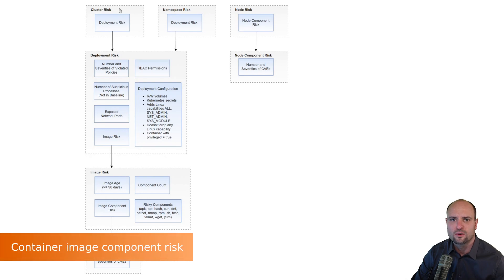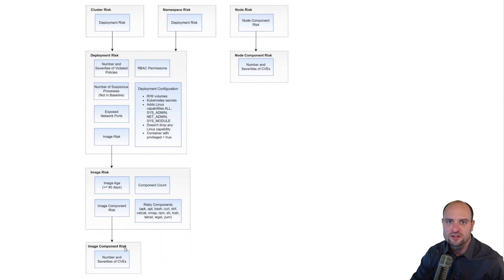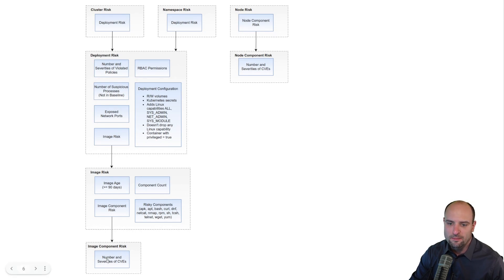Let's start with the risk score of the individual image components. These components are the RPM packages, Java JARs, Ruby gems, and other components detected by the image scanner. There can be multiple CVEs found in a single component. The overall risk of a component depends on the number of CVEs found as well as on their severities. The more CVEs found in the component, and with higher severities, the more risky is the component.